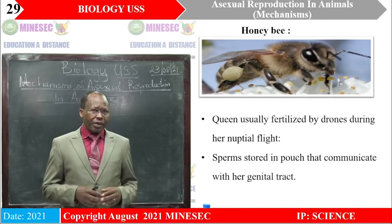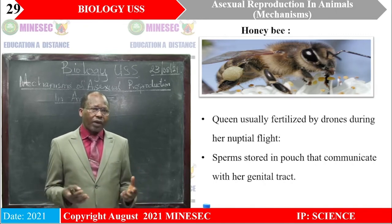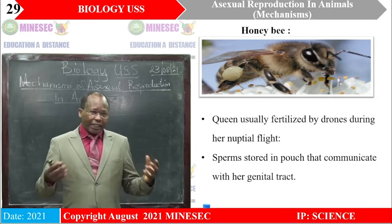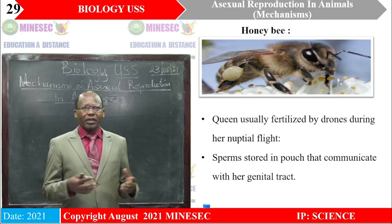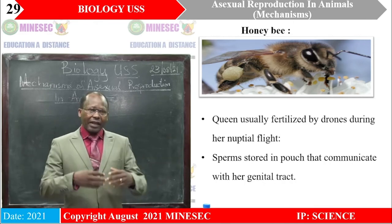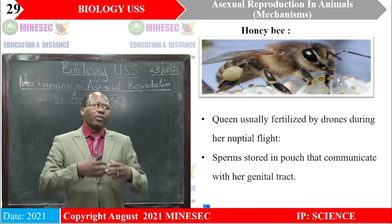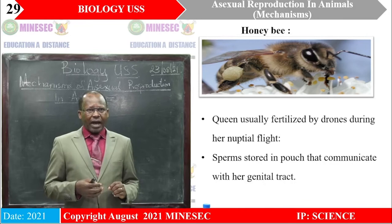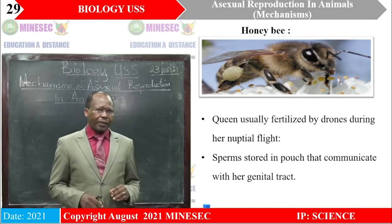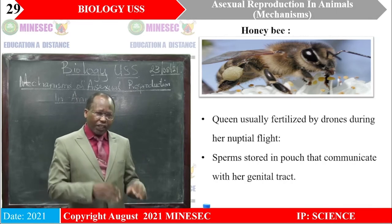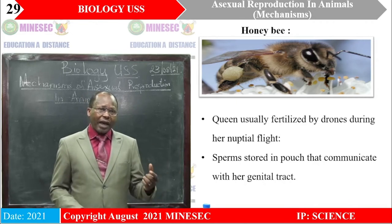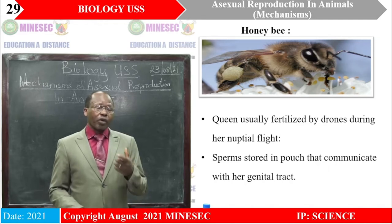We also have another example in the honeybee. The queen bee in a particular colony is usually fertilized by the drones during what we call a nuptial flight. When they fly into the sky, they meet and the male drone deposits a lot of sperm into the female. While inside, these sperm are stored in a pouch and can remain there throughout the life of the queen. The queen will then return into the hive, and with time, the stored sperm will keep migrating one after the other to fertilize the eggs being produced, meaning this female will continue to lay eggs for a very long period without going out for another nuptial flight.